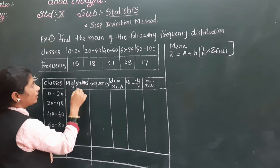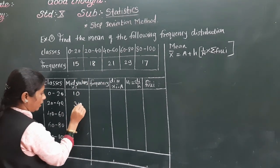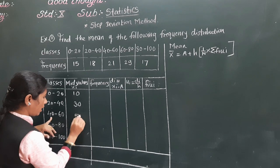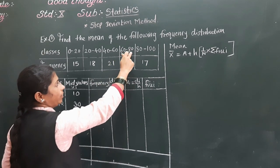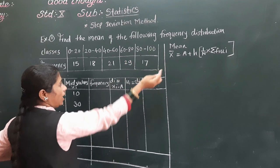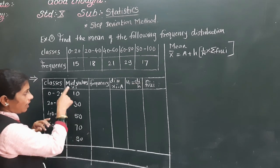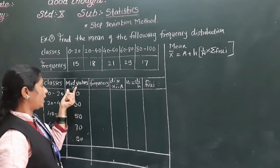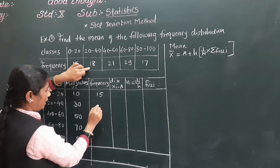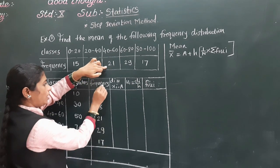The mid values are: for 0–20 it is 10; for 20–40, 20 plus 40 equals 60, divided by 2 equals 30; for 40–60, 100 divided by 2 equals 50; for 60–80, 140 divided by 2 equals 70; and for 80–100, 180 divided by 2 equals 90. So the xr values are 10, 30, 50, 70, and 90. The frequencies are already given as 15, 18, 21, 29, and 70, giving a total n of 85.